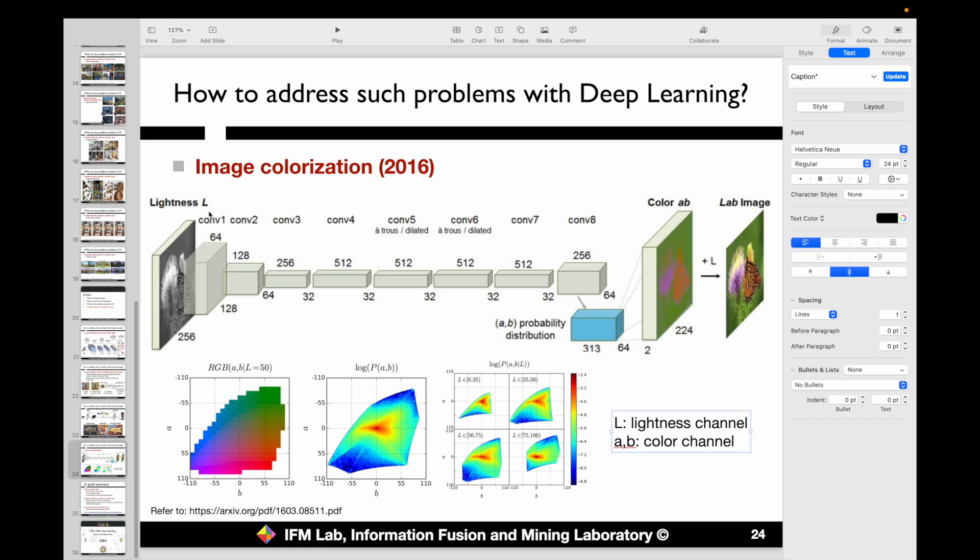Besides this L denoting the lightness of the pixels in the grayscale image, we also have two other parameters, A and B. AB denotes the color channel, and L denotes the lightness channel.